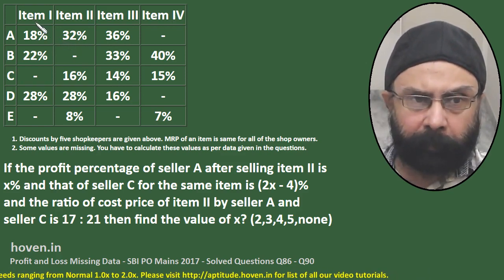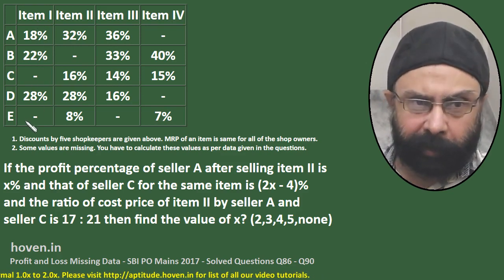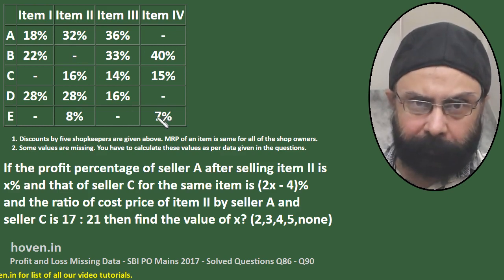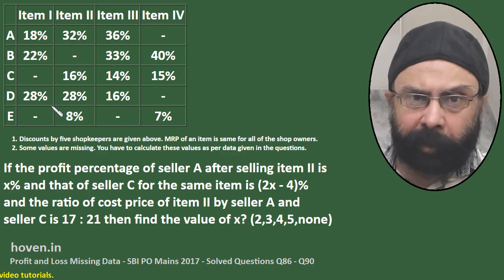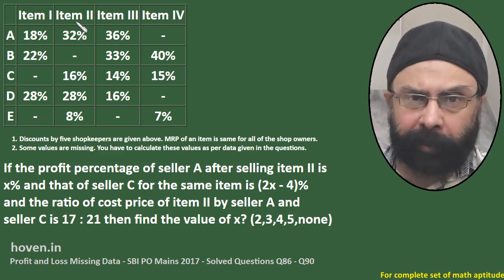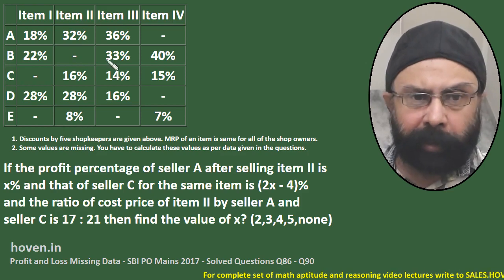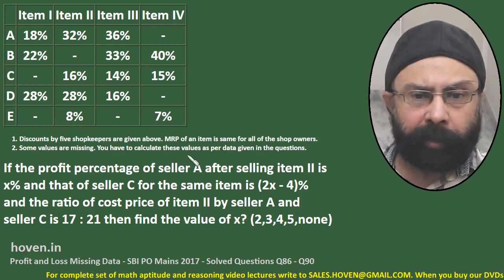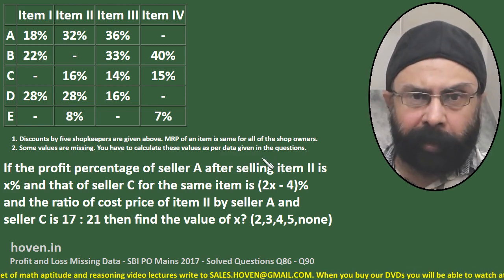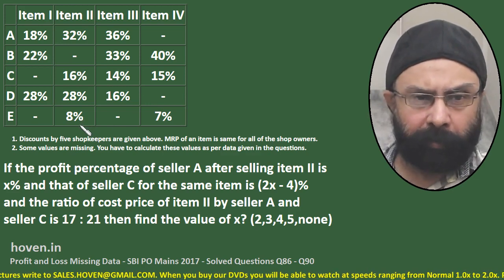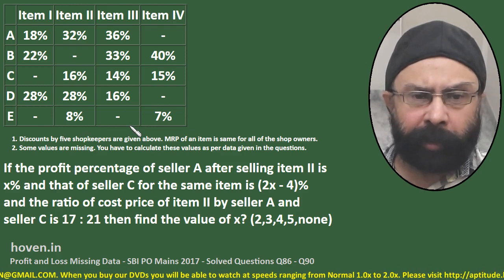So item 1 has a certain MRP — it is the same for shopkeepers A, B, C, D and E. Item 2, 3, and 4 similarly each have the same MRP across all sellers. This doesn't mean all four items have the same MRP. Item 1 might have a different MRP from item 2, but that MRP is same for all five shopkeepers. Some values are missing — we will calculate them as per the requirement as we go.